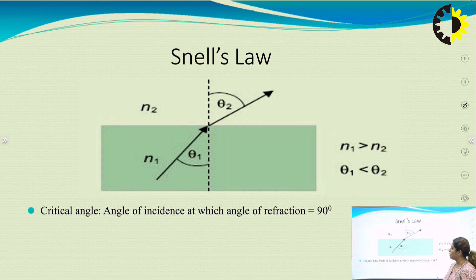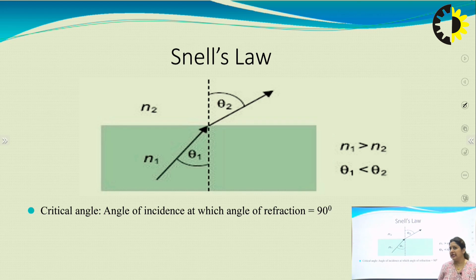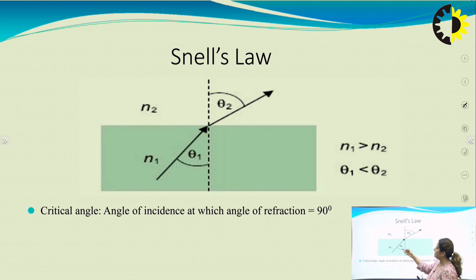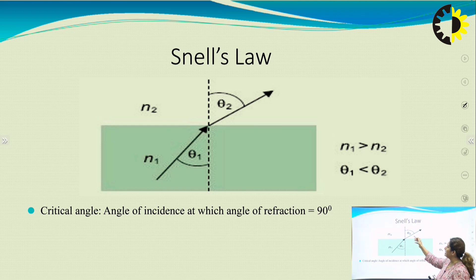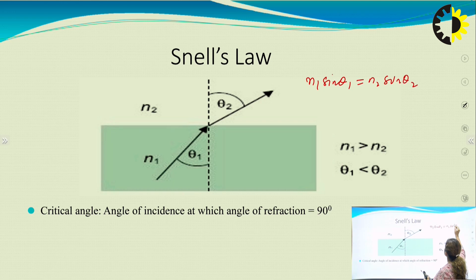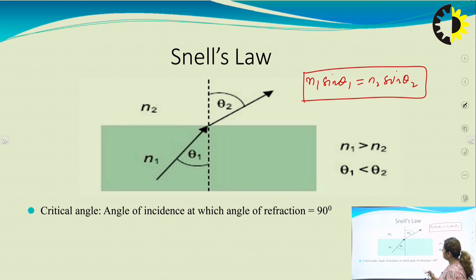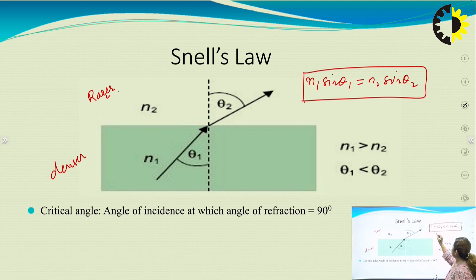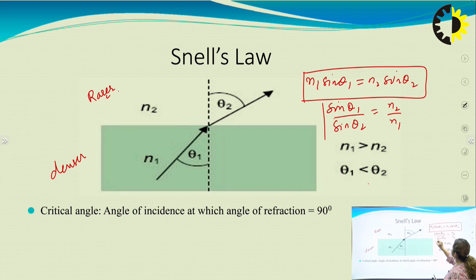Now we discuss ray theory transmission, starting with Snell's law. Optical fiber has both ray theory and mode theory components. Snell's law describes the interface between two dielectric media with refractive indices n1 and n2. Light falls on the denser medium at angle θ1 and is refracted away from the normal at angle θ2, giving the relation: n1 sin θ1 = n2 sin θ2, or sin θ1 / sin θ2 = n2 / n1. The condition is that n1 > n2, and θ1 must be less than θ2.